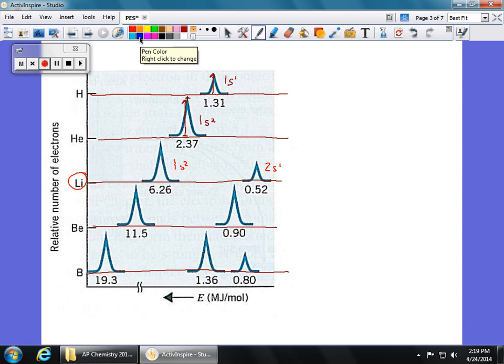So beryllium, again, 1s2. It's 1s, even greater energy. It's up to 11.5. And 2s2. It now has two electrons. And you'll see that these peaks are the same height, the peak here and the peak here, because there's the same number of electrons in S-type sublevels.